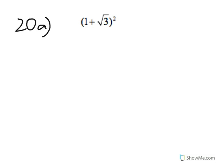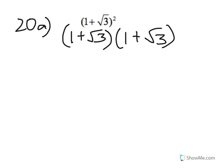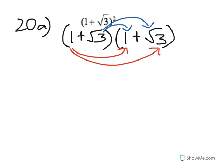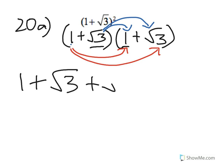In 20A, you're asked to expand (1+√3)², giving your answer in the form A plus B√3, where A and B are integers. Note that (1+√3)² is not 1² plus (√3)² — it's (1+√3) multiplied by (1+√3). Using FOIL: 1×1 is 1, plus 1×√3 is √3, plus √3×1 is √3, plus √3×√3 is 3.